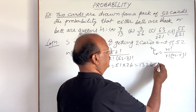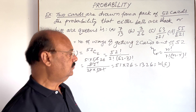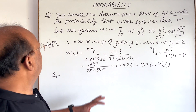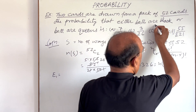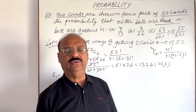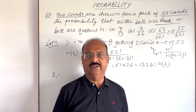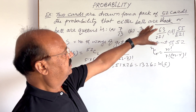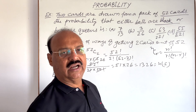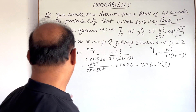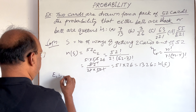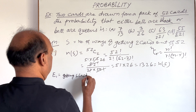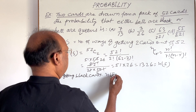This equals 1326, so n(S) = 1326. Now let E1 be the event of getting two black cards. As you know, there are 26 black cards in total — 13 spades and 13 clubs. So out of these 26 cards, we need to find the probability that both cards come from this black group. n(E1) will be calculated accordingly.